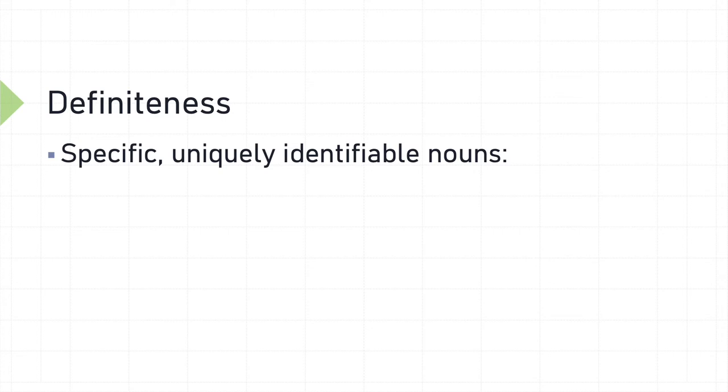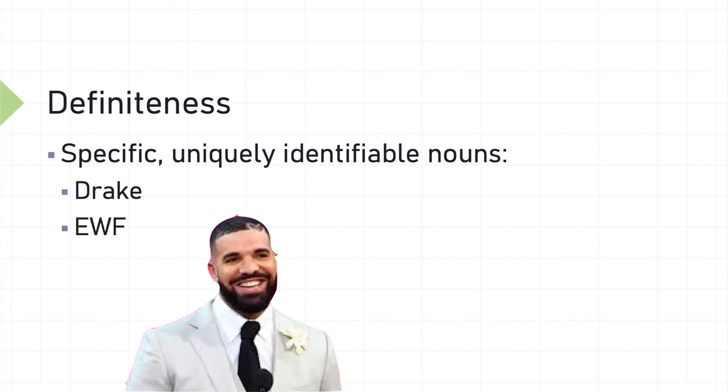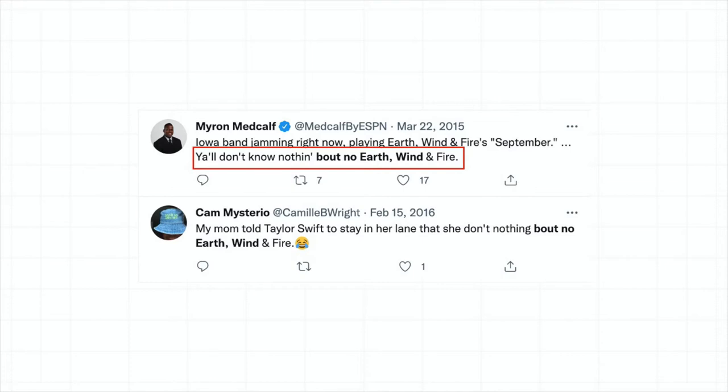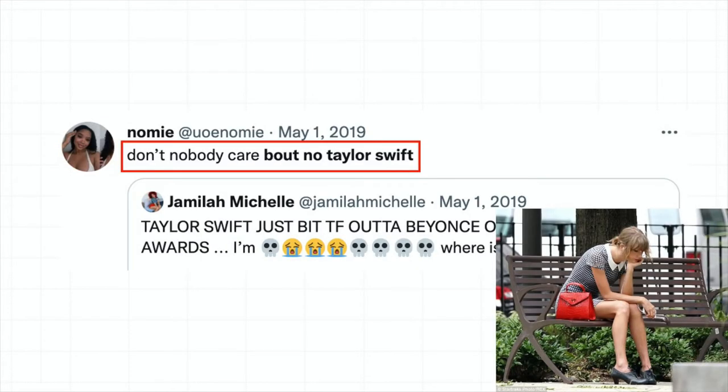But in our first examples and others like them, people use this no before specific uniquely identifiable nouns, including proper names like Drake, or Earth, Wind, and Fire, or even words. So what's going on here?